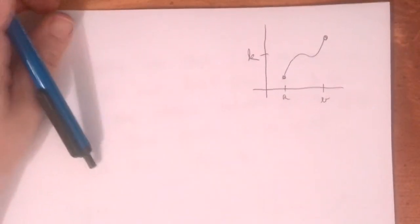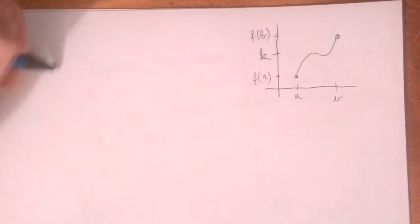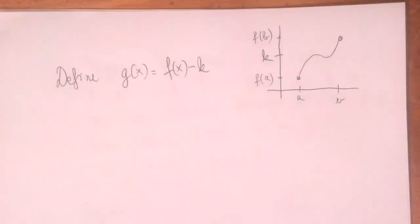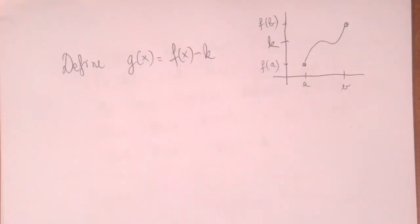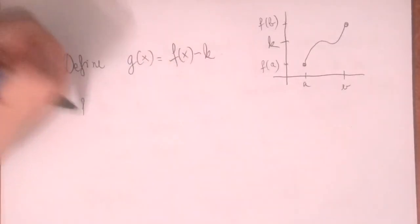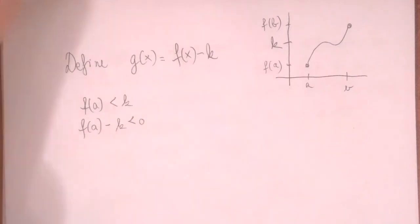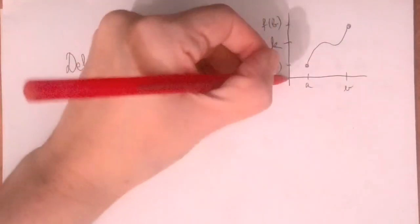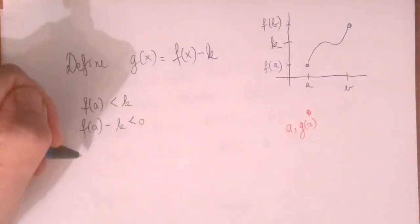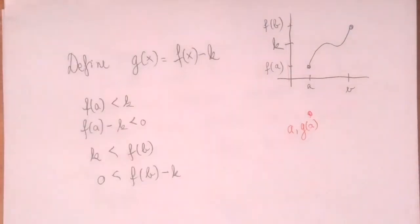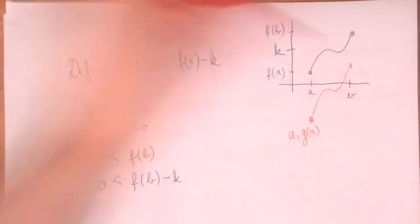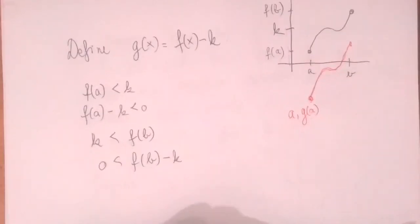Here is our function continuous on the closed interval, and here is our k. Suppose f is continuous on a, b, f of a is less than f of b, and k is any intermediate value between f of a and f of b. Now define a new function g of x, where we shift f down by k units: g of x equals f of x minus k. Since f of a is less than k, f of a minus k is negative — that is g of a. Since k is less than f of b, f of b minus k is positive — that is g of b.